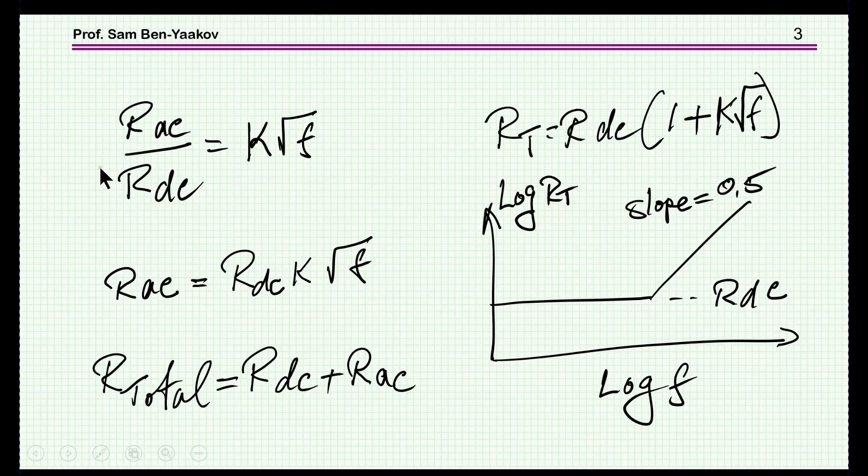Therefore, the ratio between RAC and RDC is a function like this, it's a square root of F, and in this case dependent on the geometrical consideration. We can express RAC as RDC times this square root of F.